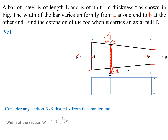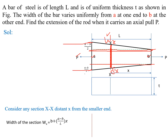The width of the section wx is equal to b plus (a minus b) divided by L, into x. Let us see how this relation is derived. Draw a straight line at the end of the smaller end — two straight lines. The total width a consists of the portion b up to the smaller section, and the remaining portion is a minus b total.